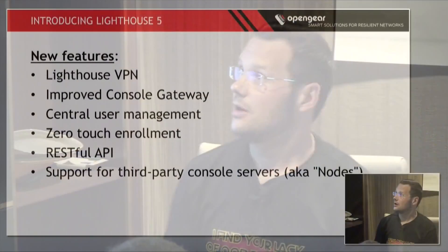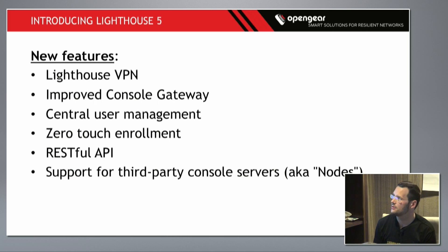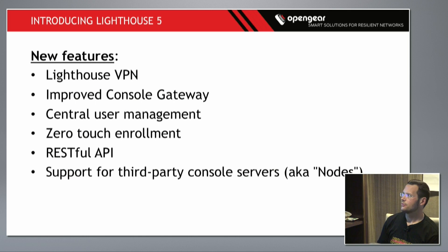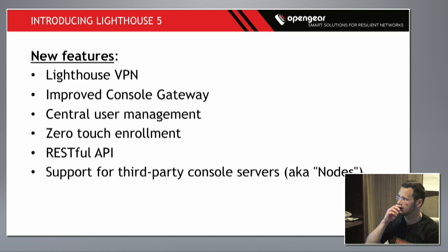Just a really quick overview of the new features — as much context for the demo as anything. Lighthouse VPN is our new network architecture — it's kind of like a virtual management plane implemented using OpenVPN. Improvements to our console gateway, which is our SSH and HTTPS console concentrator, so you can get to all your console devices — your connected routers, switches, and things like that — through one point.